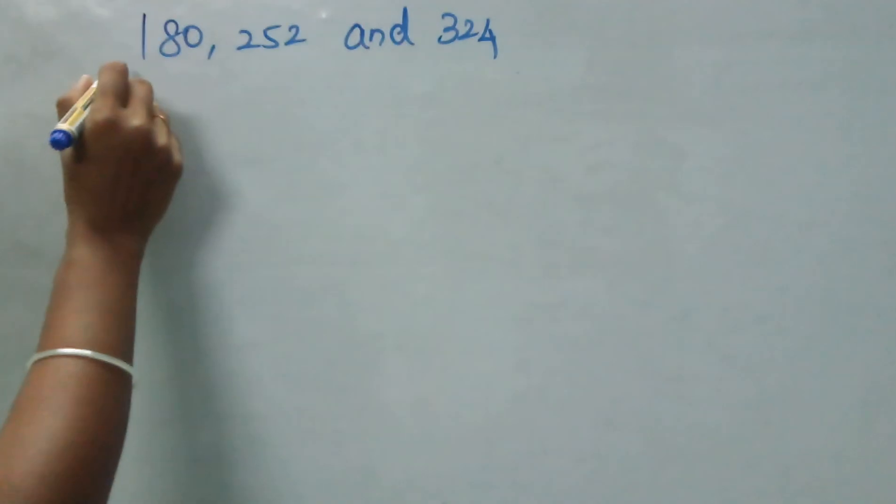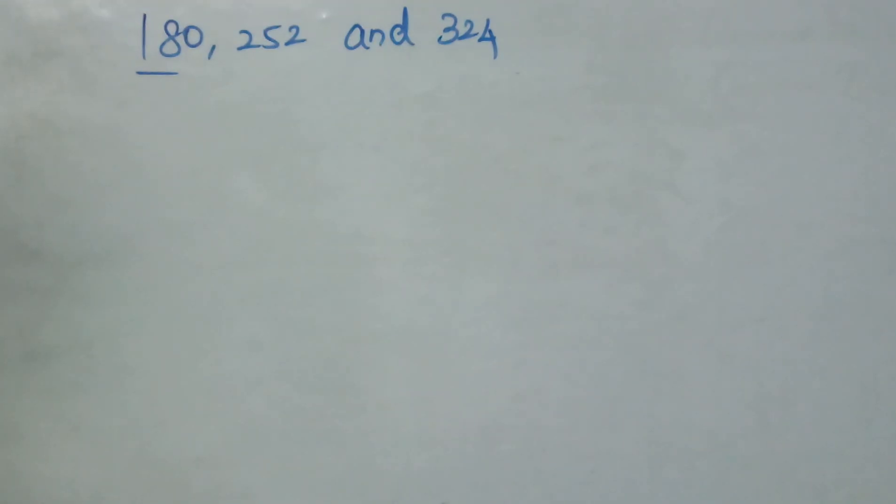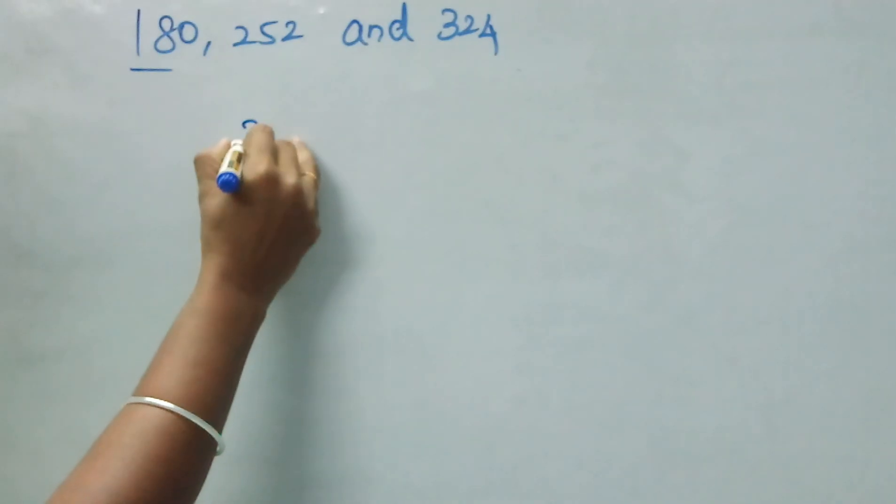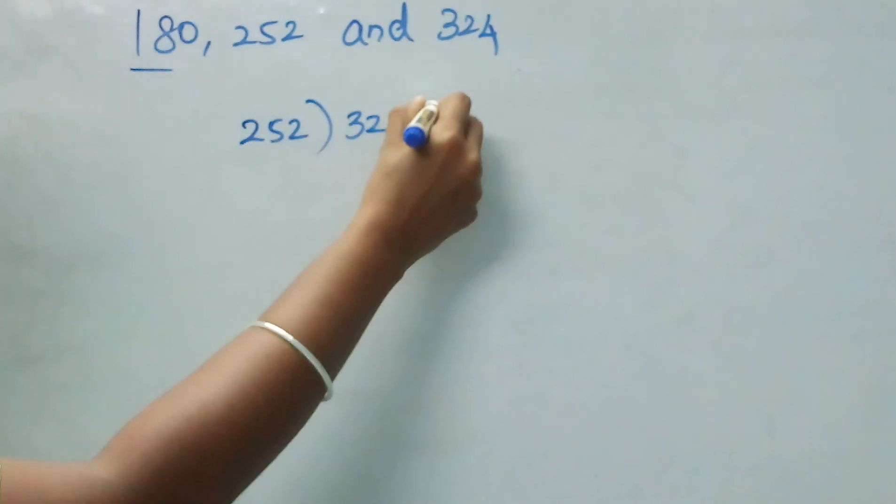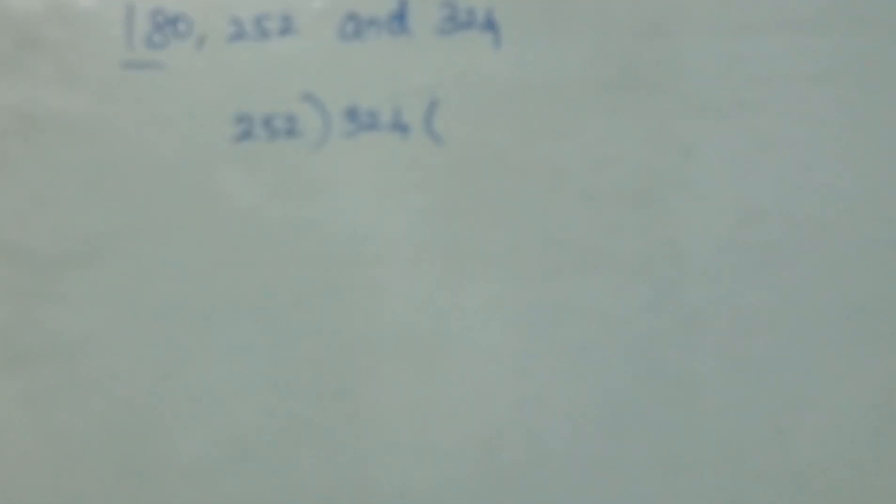See which one is least here? 180 is least here. So, make 252 as divisor and 324 the biggest one as dividend.